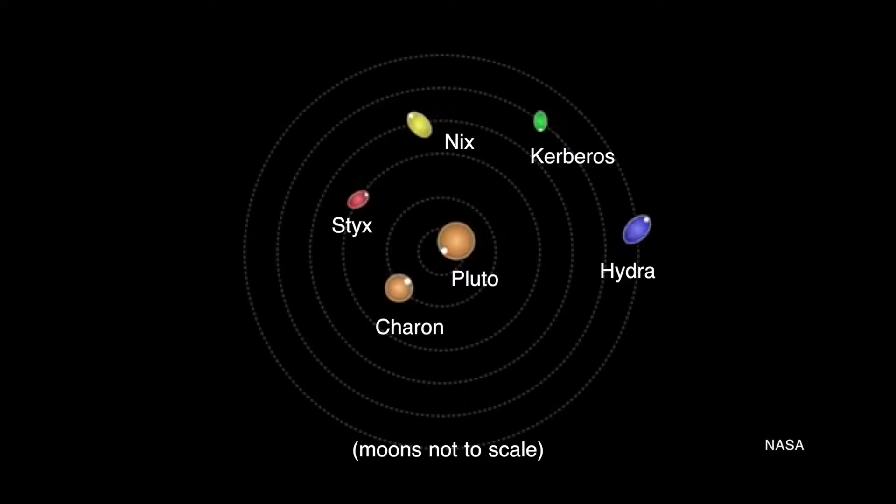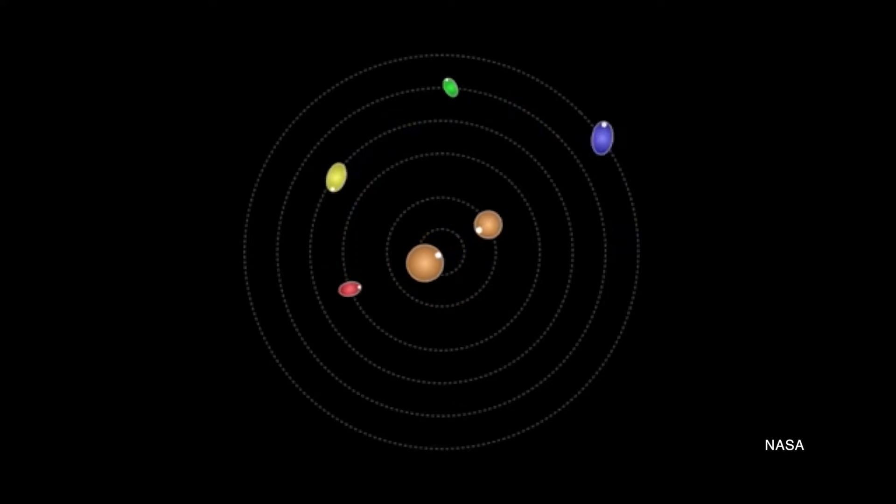Pluto's four smaller moons, Styx, Nyx, Kerberos, and Hydra, are differently fascinating than Charon. These moons are each 20 to about 50 times smaller than Charon, they aren't round like Charon, and unlike pretty much every moon in the solar system, they are not in synchronous rotation with their host planet. They don't always show one face to their host.